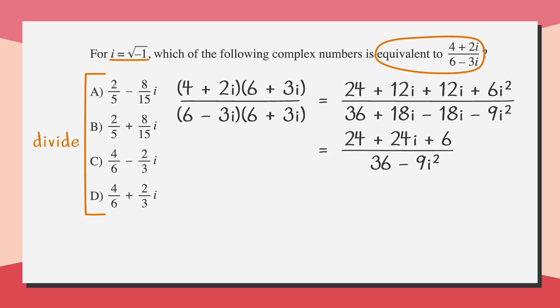We can simplify that to 24 plus 24i plus 6i squared over 36 minus 9i squared. Next, we know i squared equals negative 1, so let's plug that in. And we get 24 plus 24i minus 6 over 36 minus negative 9. A bit of arithmetic gives us 18 plus 24i over 45.